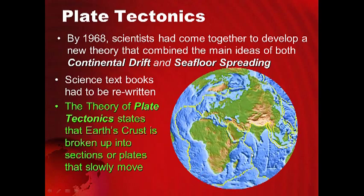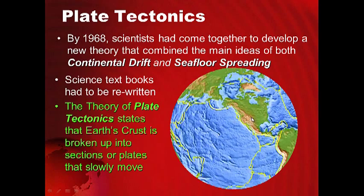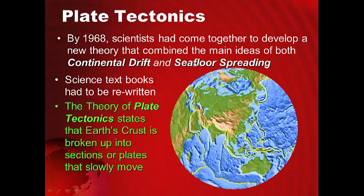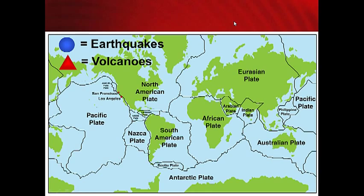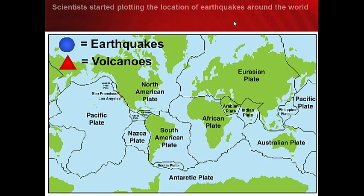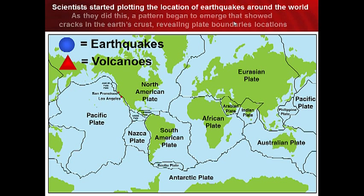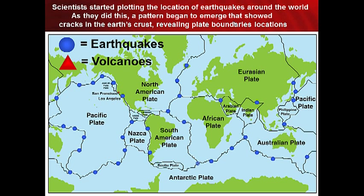These yellow lines on this diagram show where these plates meet — these plate boundaries. Scientists started plotting the location of earthquakes around the world. As they did this, a pattern began to emerge that showed the cracks in the earth's crust, revealing plate boundary locations. Once they started plotting earthquakes, it became apparent where these plates meet, or what we call plate boundaries.